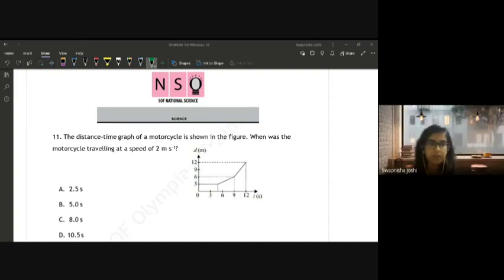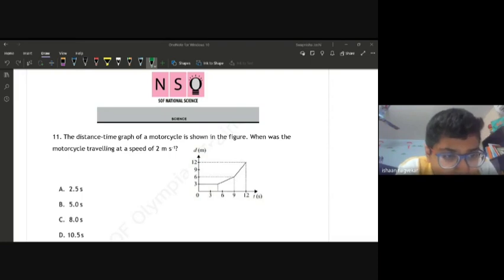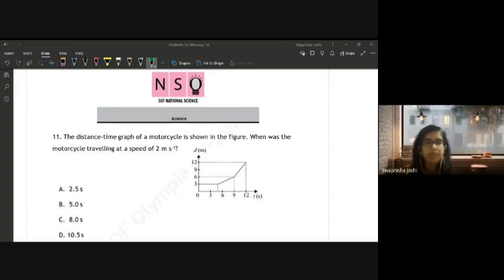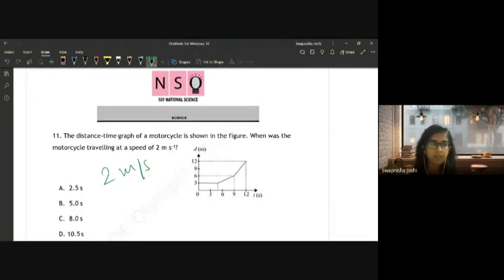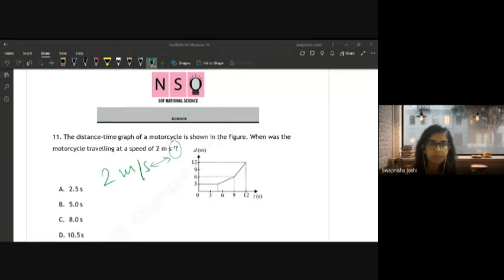What is not given? Two meters is not given. Okay, can you read the question for us? Yes ma'am. The distance-time graph of a motorcycle is shown in the figure. When was the motorcycle traveling at the speed of 2 meters per second raised to minus one? Raised to minus one here means per second. Whenever there is a minus one, it means that is the denominator of the equation, so we can also write this as 2 meters per second rather than using the division sign.